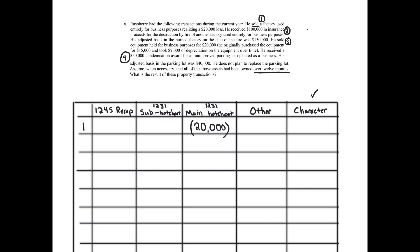Let's go on to number two. He received $100,000 in insurance proceeds for the destruction by fire of another factory used entirely for business purposes. His adjusted basis in the factory on the date of the fire was $150,000. We're not given the gain or loss here, so we calculate it: $100,000 amount realized minus $150,000 adjusted basis gives us a $50,000 loss. It's an involuntary conversion, and the non-recognition rule under Section 1033 is not going to apply — it's a loss. So the $50,000 loss will be recognized.